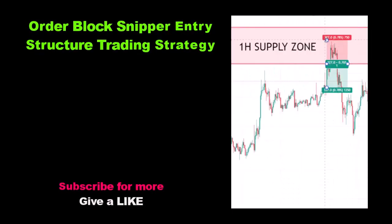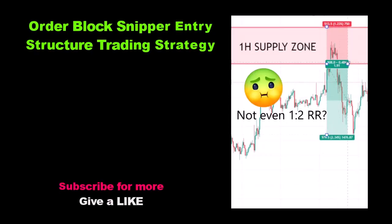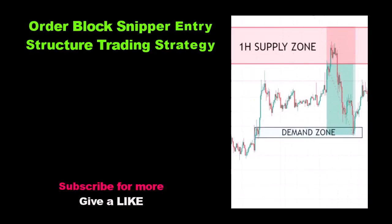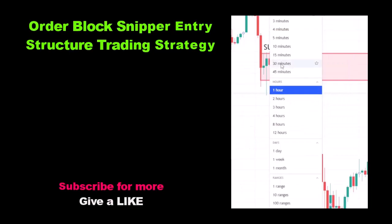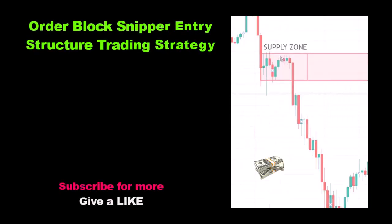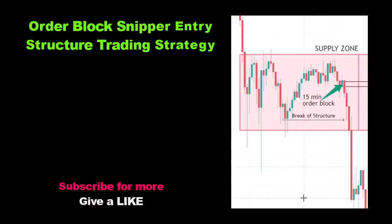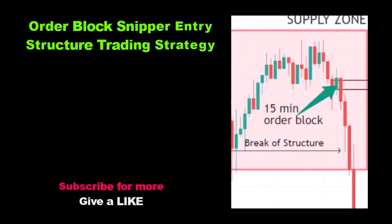Here is an example. Instead of using this whole supply zone and getting an average risk to reward ratio targeting this demand zone right here, go to a lower timeframe and look for the last opposite colored candle before the move that broke structure. This is your order block.